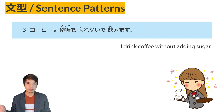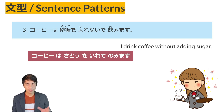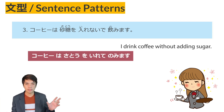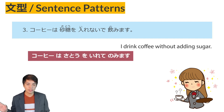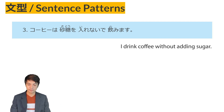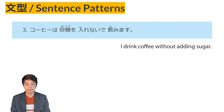For the verb te form, you can say koohii wa sato o irete nomimasu — I drink coffee with sugar, or with adding sugar, I drink coffee. So verb te verb, and verb naide verb. Now let's proceed to example sentences.